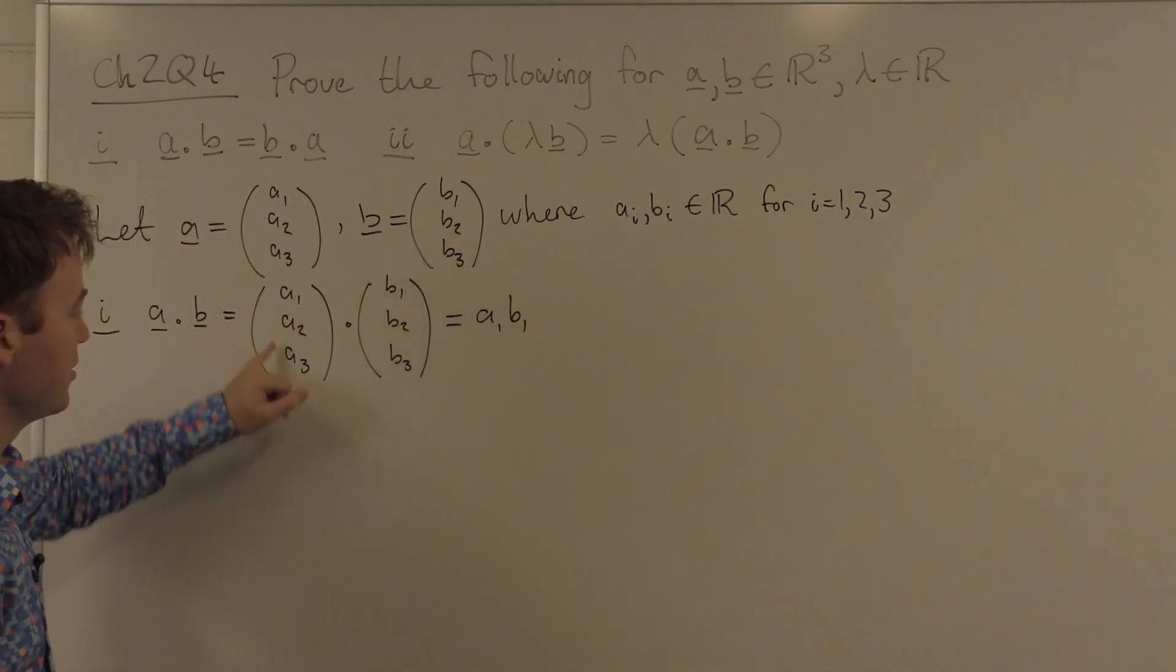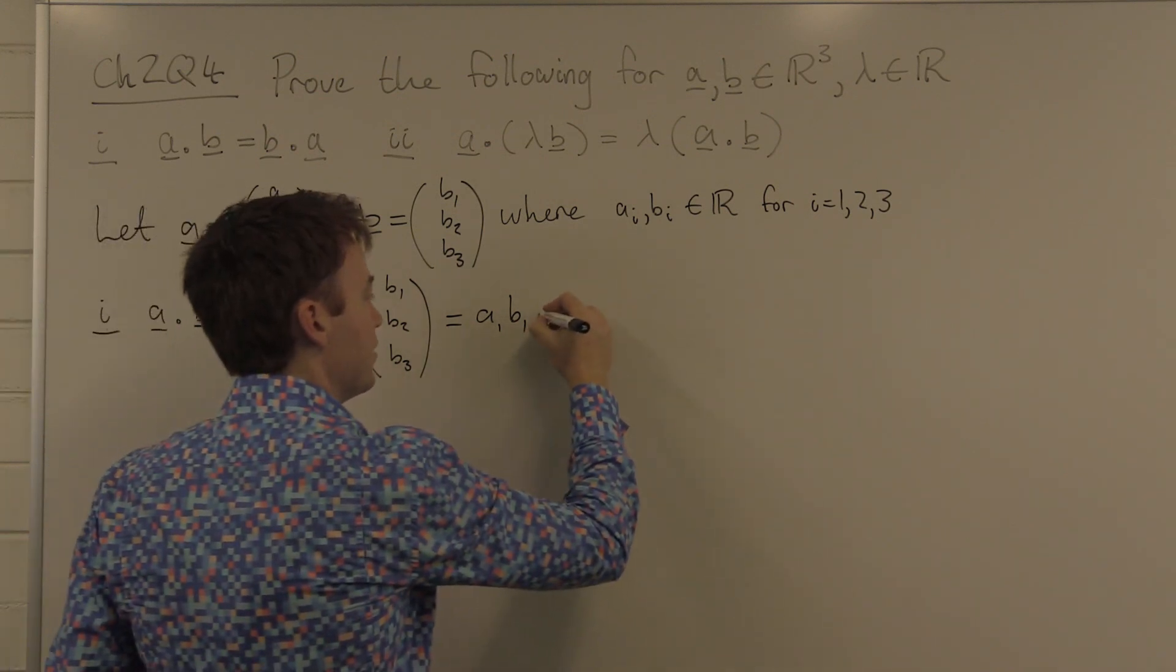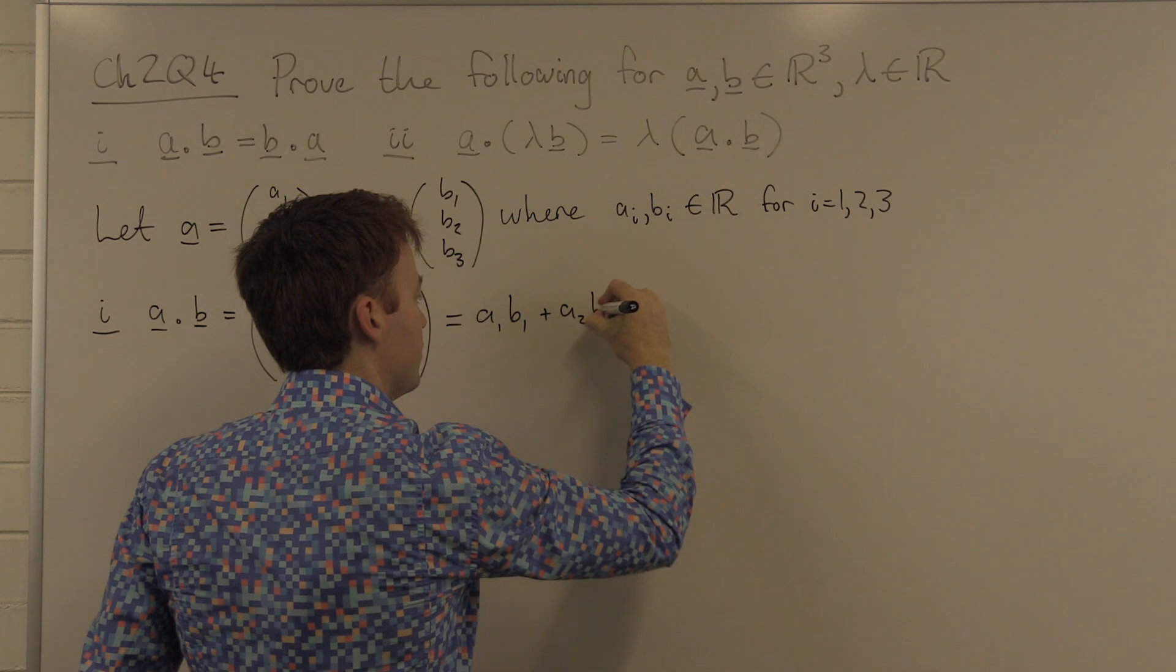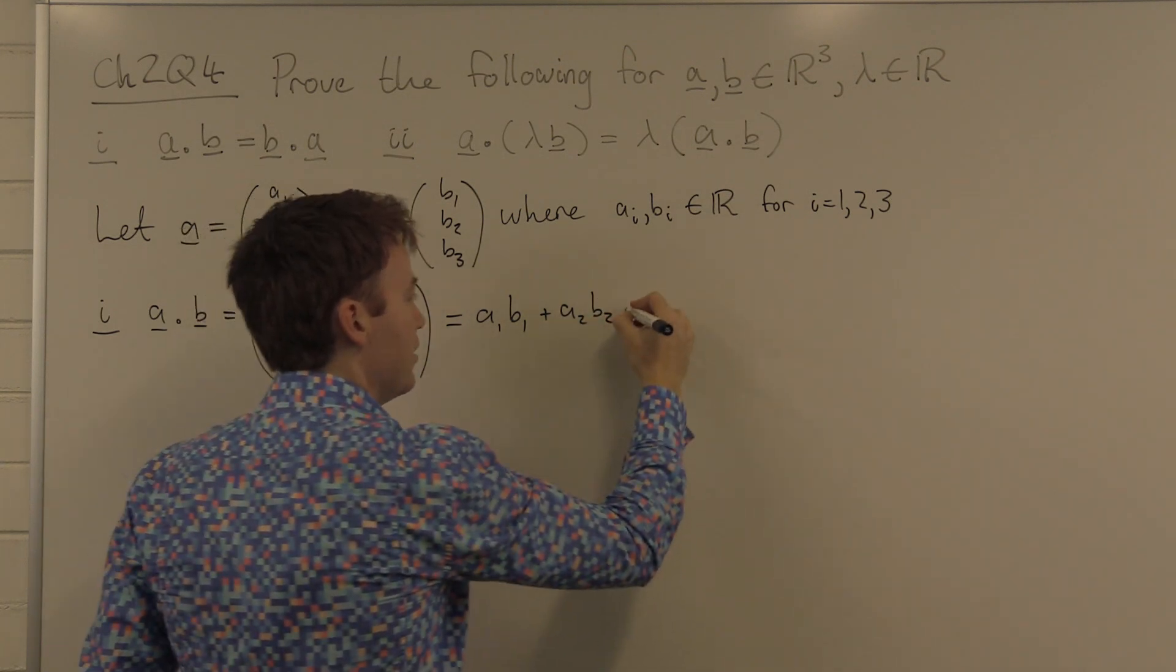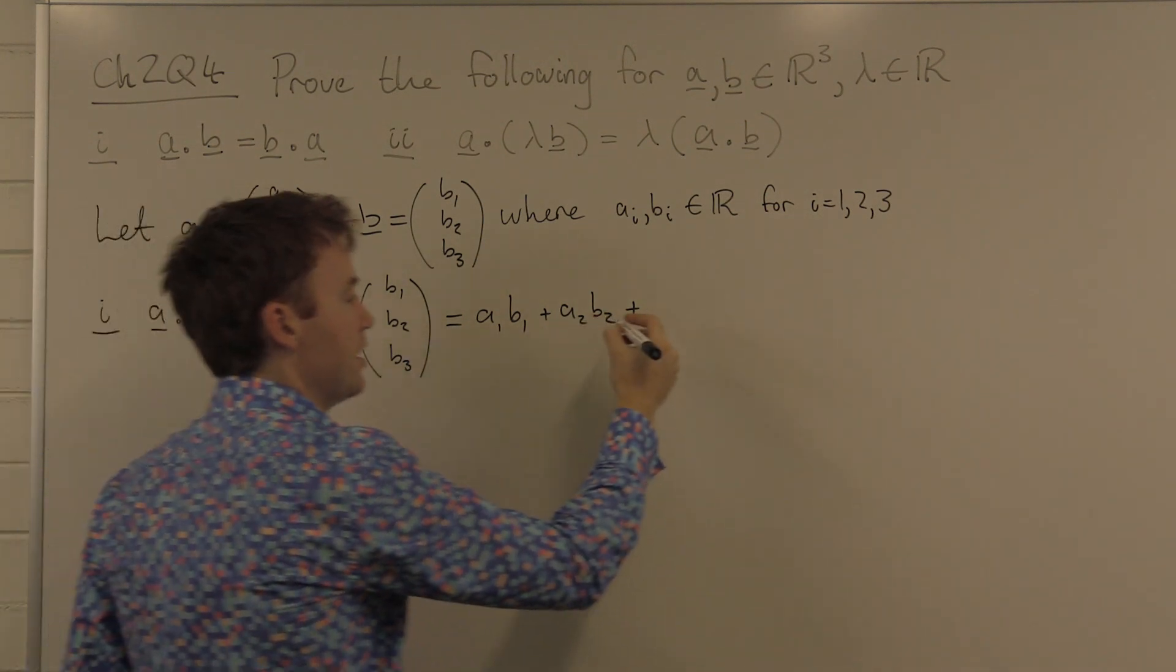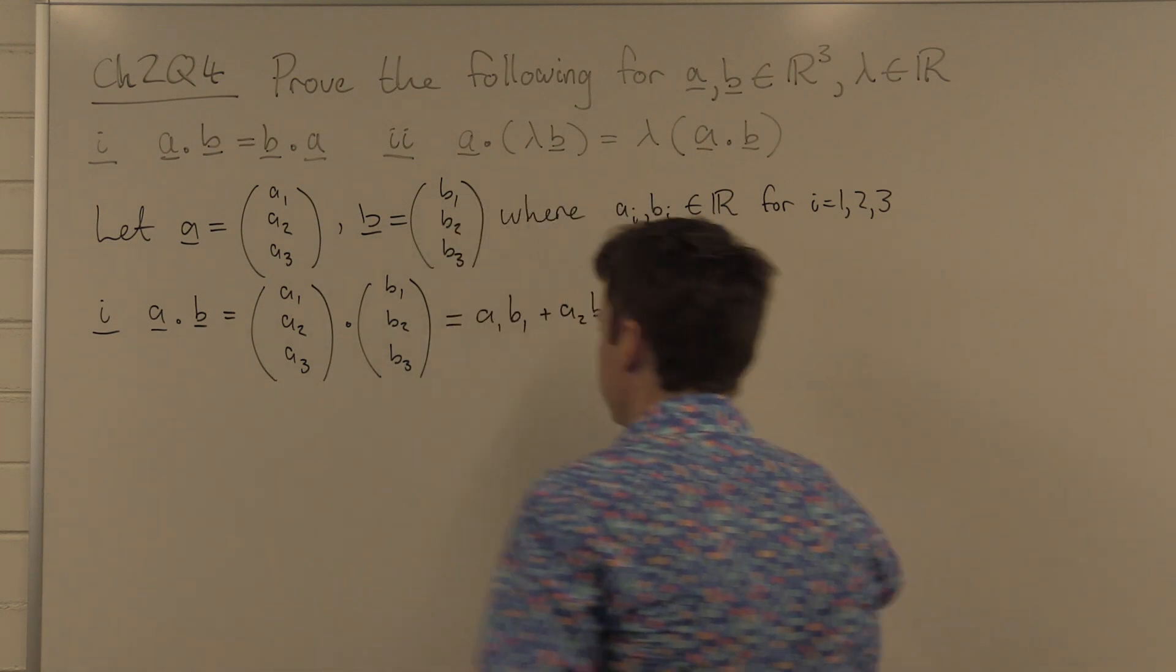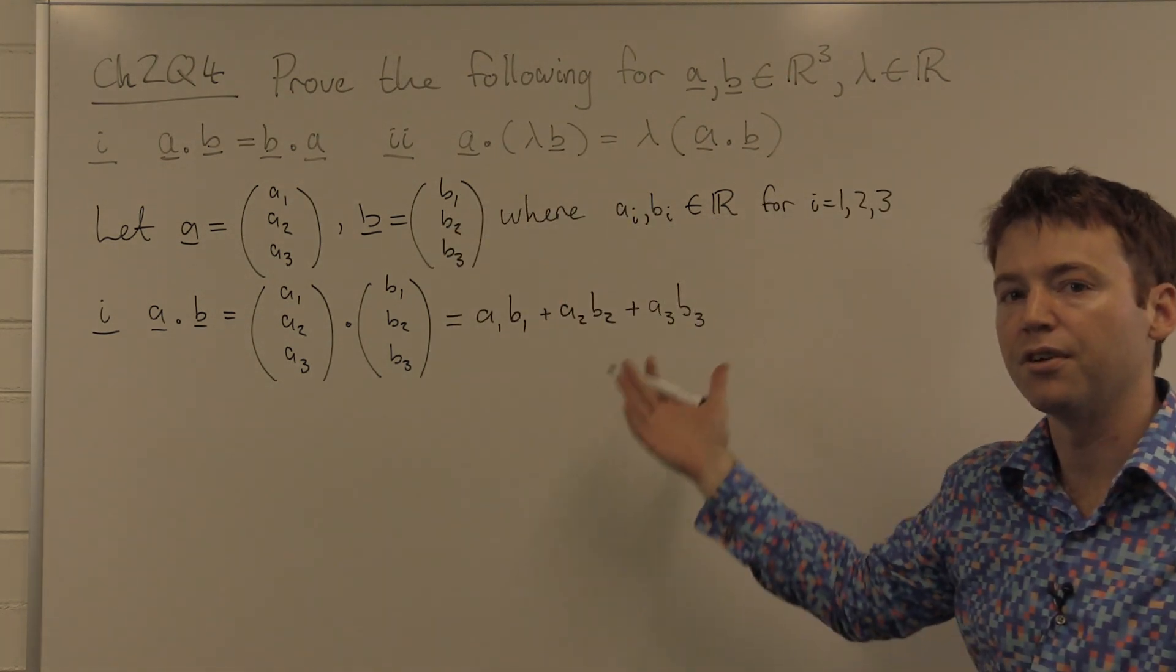And then you add the second element of this vector times the second element of this vector, and you add the third element and so on until you run out of elements. Behold the definition of dot product.